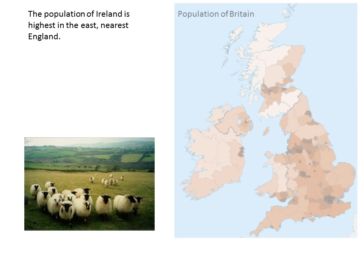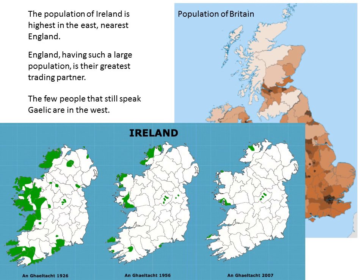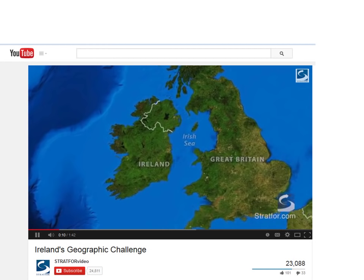The population of Ireland is highest in the east, nearest England. Having such a large population and being so close, England is their greatest trading partner. The people who speak Gaelic tend to be away from this population center and in the west. The language is shrinking — although all children are required to learn it in school, English is the most common language spoken in the home.